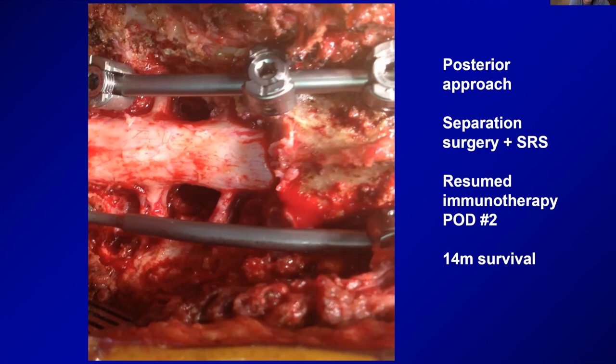That's an overview of some of the most common tumors we see and some of the conceptual frameworks we think about in spine oncology. Obviously there's so much more, but I thought this would be a good primer and overview. I'm happy to take any questions or talk about anything you like — the time is yours. Thank you for logging in, paying attention, and participating.